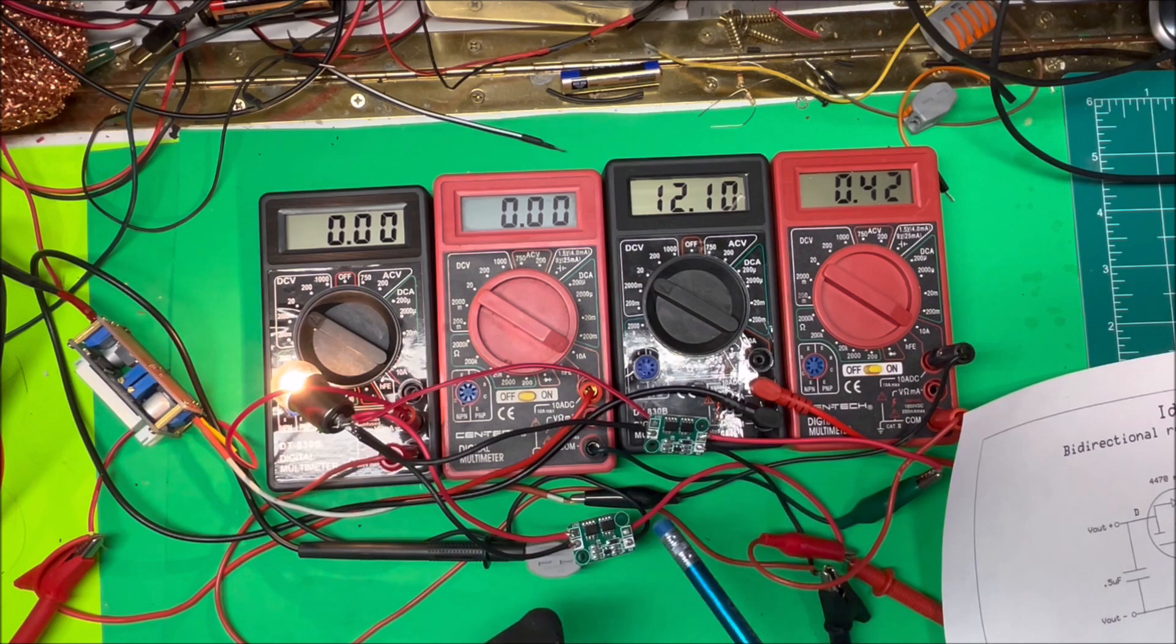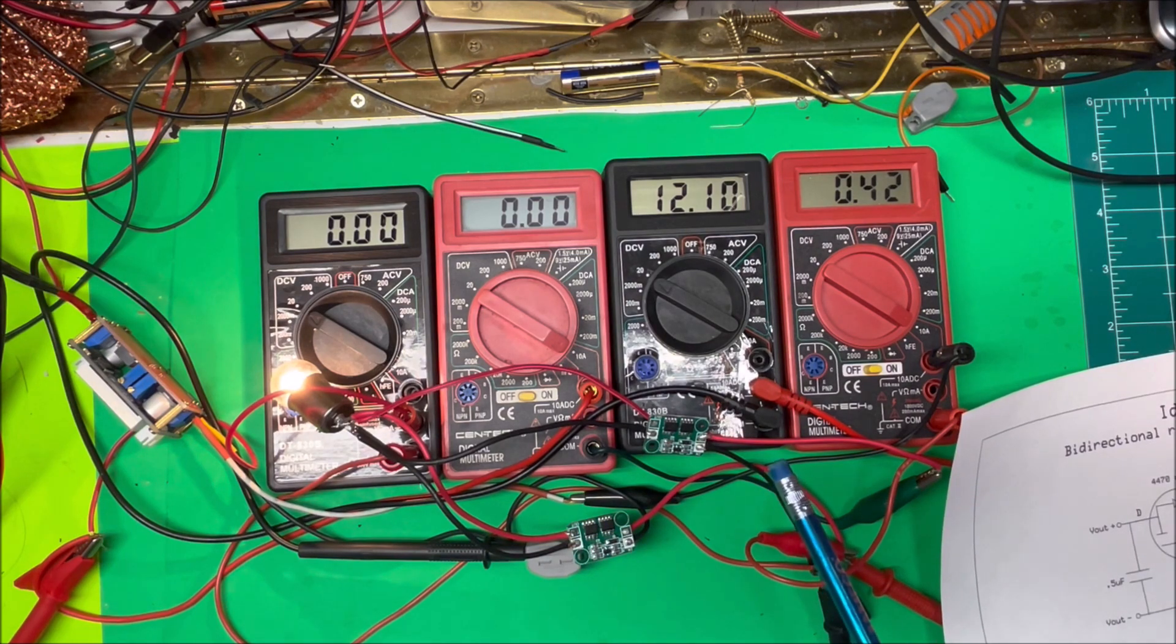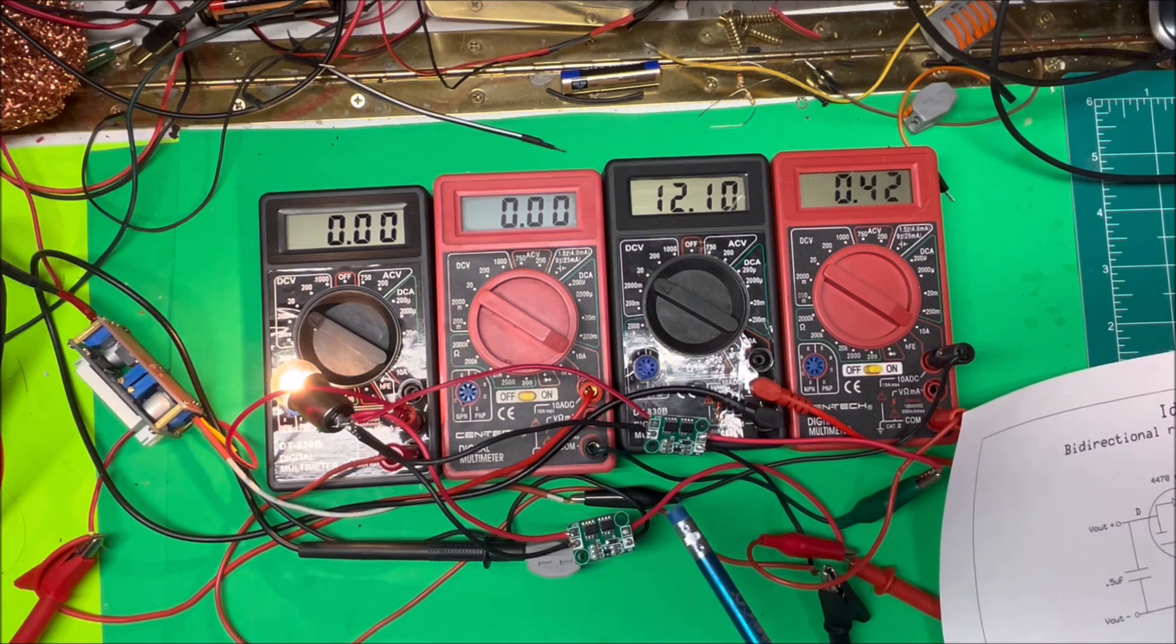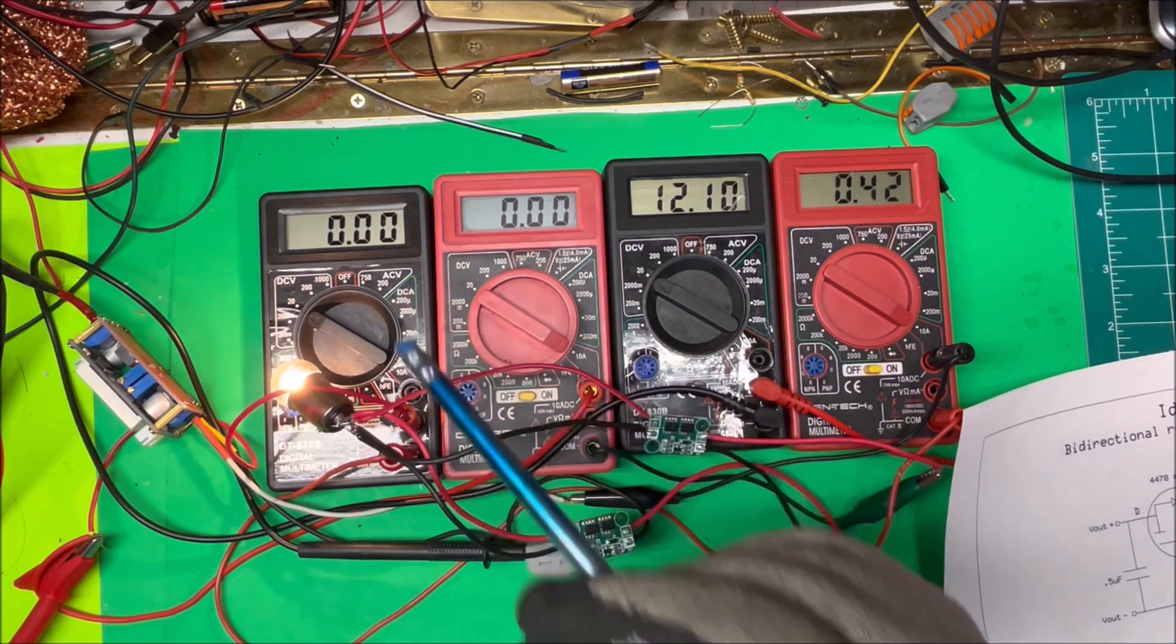Now if I put a voltmeter across from the input to the output on there, I'm only dropping 0.02 volts on there, so that's perfect. Okay, now let's turn both of them on.